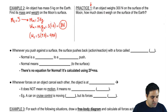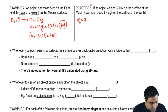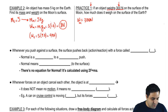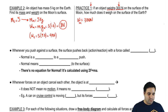If an object weighs 300 newtons on the surface of the Moon — weight on the Moon equals 300 newtons. By the way, every time you see newtons it has to be a weight; if you see kilograms or pounds, it's mass. How much does it weigh on the surface of the Earth?